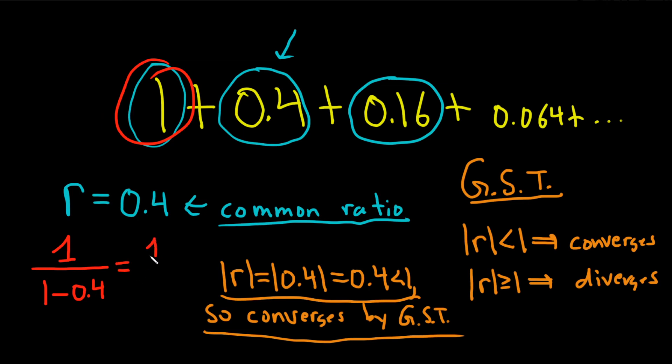So this is 1 over 0.6. And let's say you don't have a calculator for some reason, like your batteries are broken or you can't use one. How do you do this? Try to think of 0.6 as 6 tenths. So this is really 1 over 6 tenths.